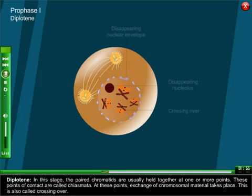Diplotene: In this stage the paired chromatids are usually held together at one or more points. These points of contact are called chiasmata. At these points exchange of chromosomal material takes place. This is also called crossing over.